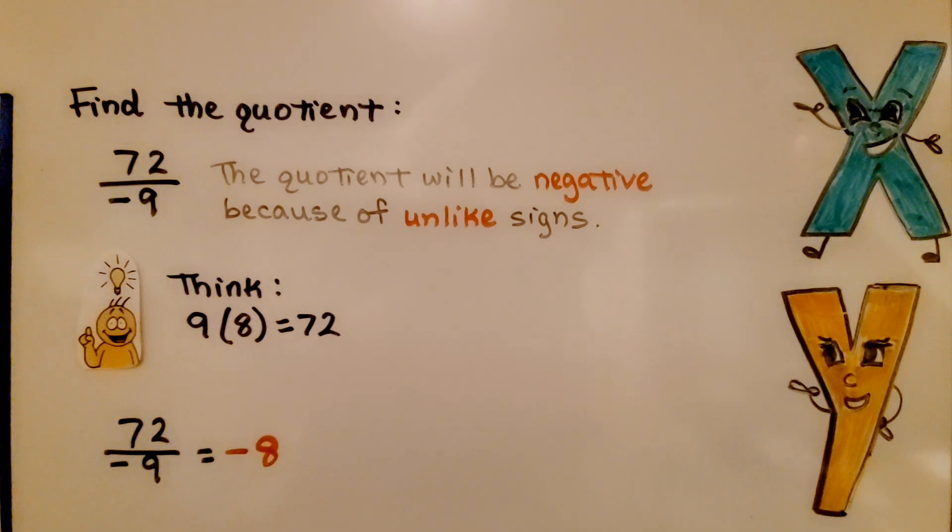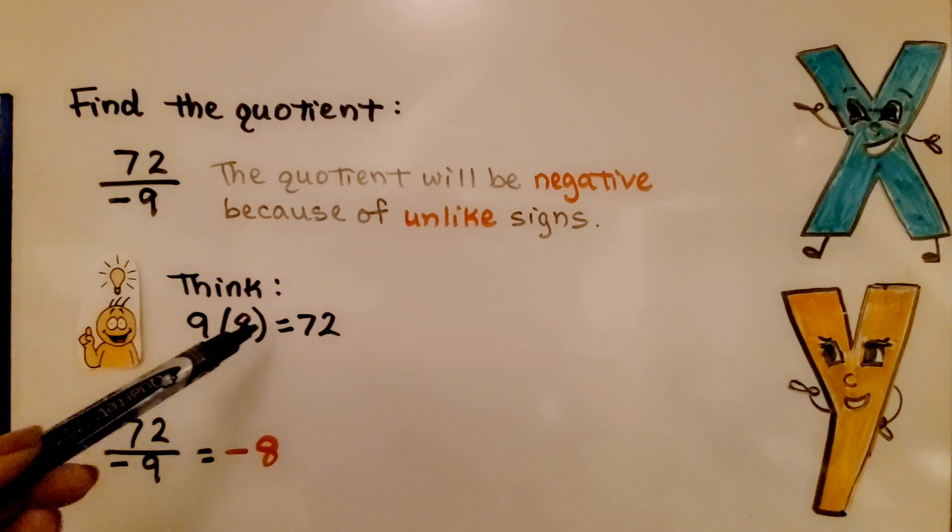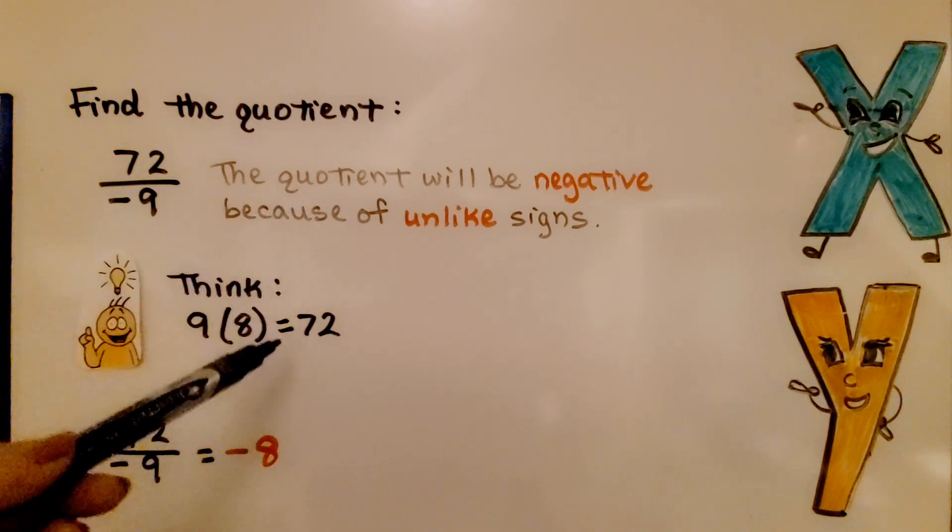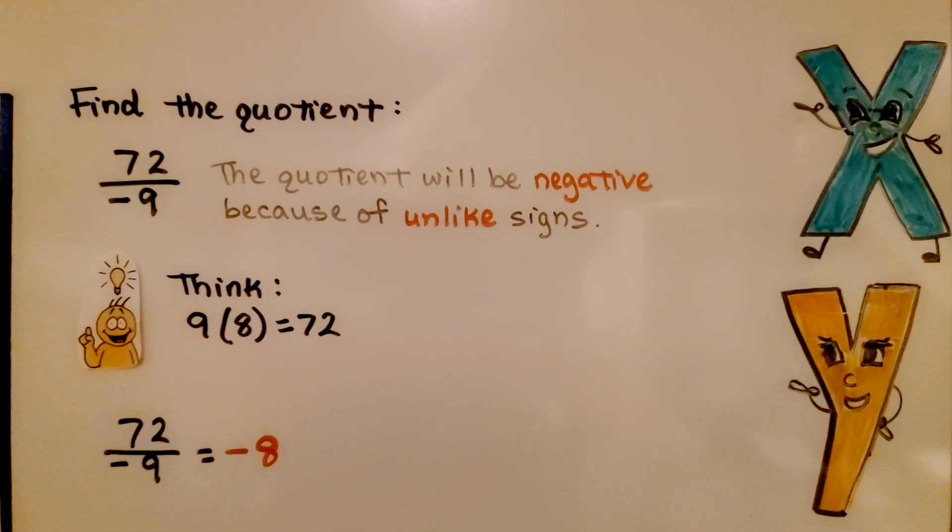Here we find the quotient. We have 72 divided by negative 9. The quotient will be negative because of unlike signs. We think, 9 times 8 equals 72. We know it's negative, so it must be negative 8. Because multiplication is the inverse of division, we can use our knowledge of math facts to help us go quicker.